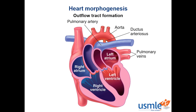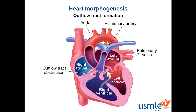Another displacement of the septum — anterior and lateral displacement — leads to tetralogy of Fallot. The anterior-lateral displacement of the descending aorticopulmonary septum doesn't allow for closure of the interventricular septum, creating a ventricular septal defect. This also causes outflow obstruction of the pulmonary artery, causing pulmonary stenosis. As a result of the high pulmonary pressures, the right ventricle hypertrophies — our third feature is therefore RVH. Finally, as a result of the displacement of the aorticopulmonary septum, we have an overriding aorta, which means the aorta is above the ventricular septal defect. RVH leads to a boot-shaped heart on chest x-ray.